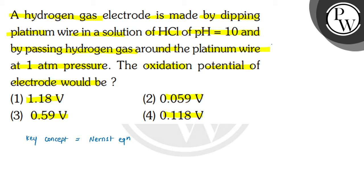The hydrogen gas electrode half-reaction: ½H₂ converts into H⁺ and one electron is released. This is the correct equation.